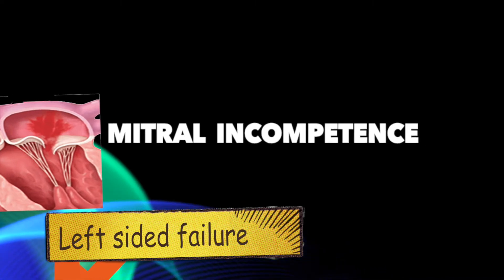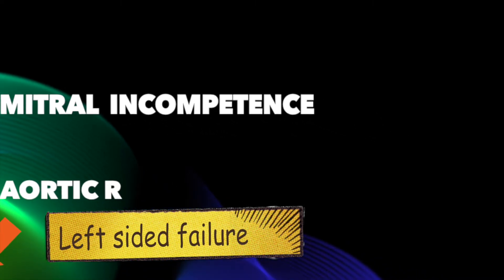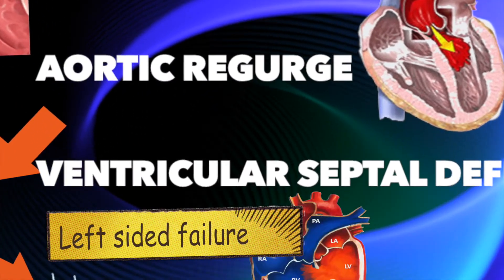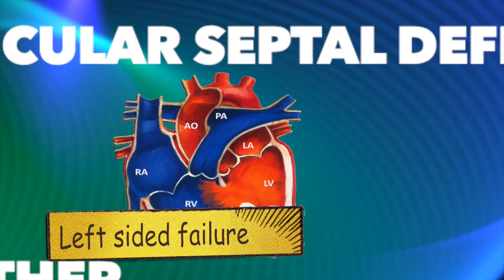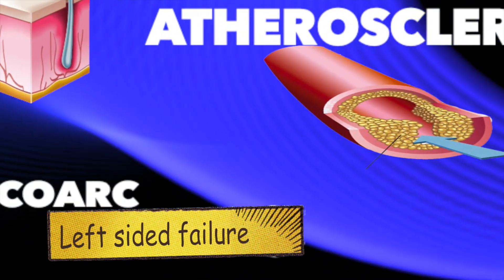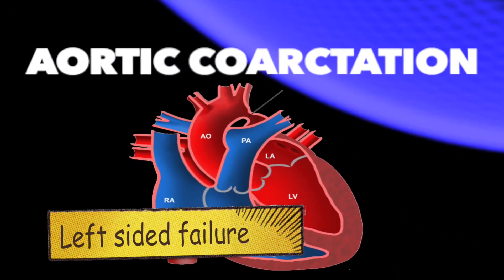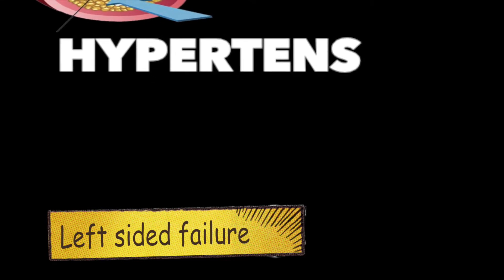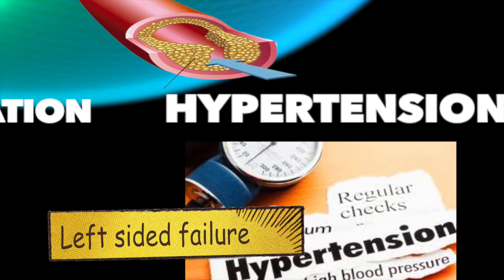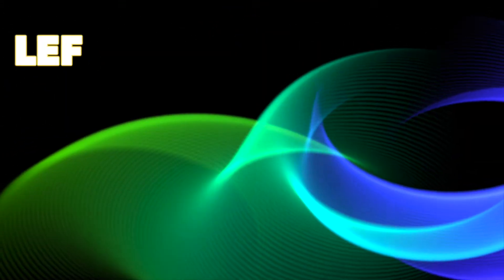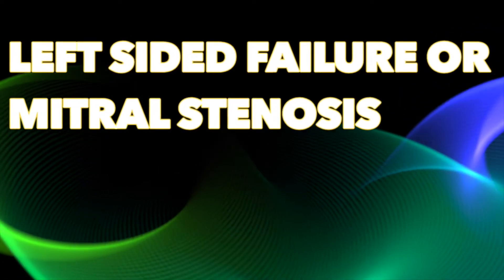Causes of left-sided failure include increased venous load such as mitral incompetence, aortic incompetence, and ventricular septal defects, and increased pressure load such as atherosclerosis, aortic coarctation, and hypertension. The most common cause of right-sided heart failure is left-sided heart failure or mitral stenosis.